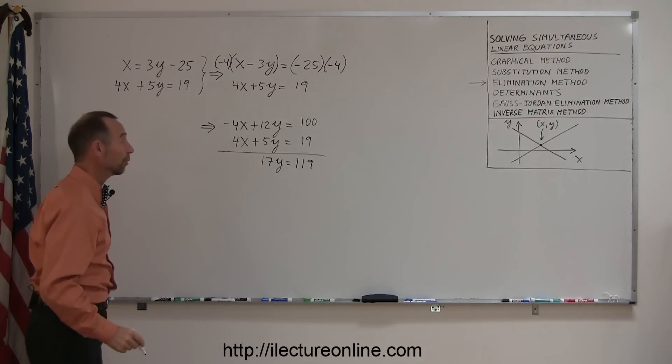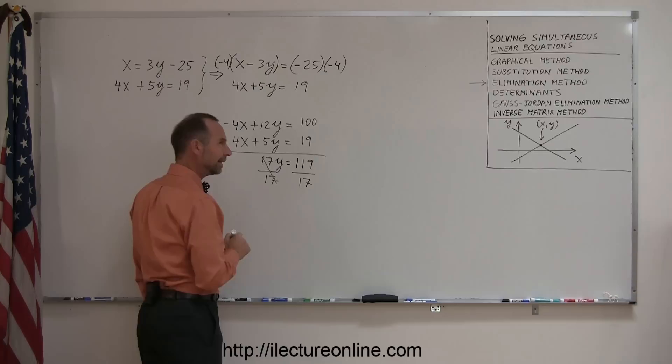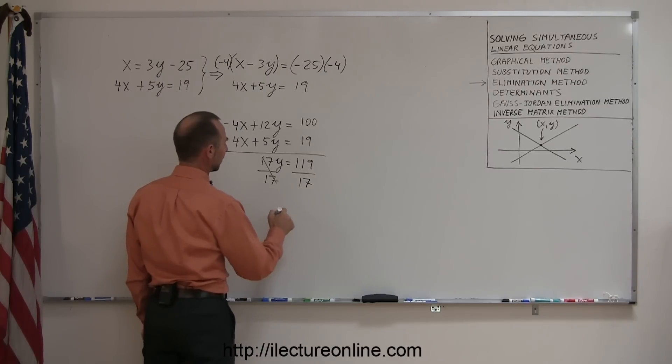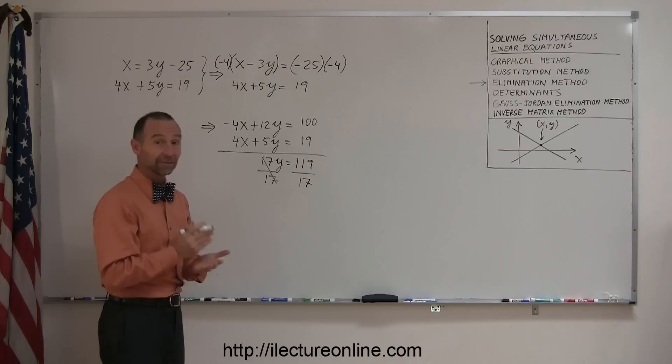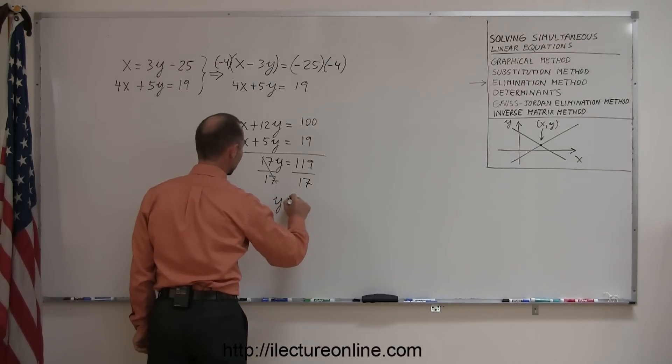Solving this for y, I divide both sides by 17. And it looks like 17 goes into 119 exactly seven times, because 7 times 10 is 70, and 7 times 7 is 49, and 70 plus 49 is 119. So that means y equals 7.